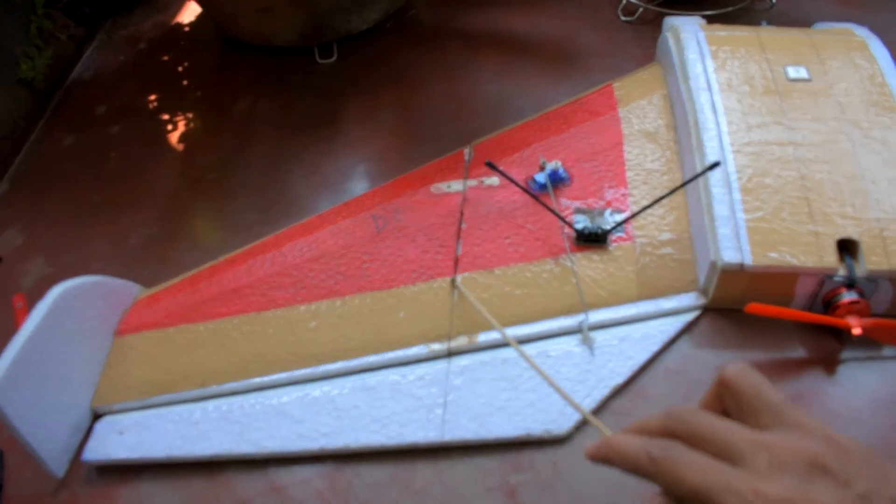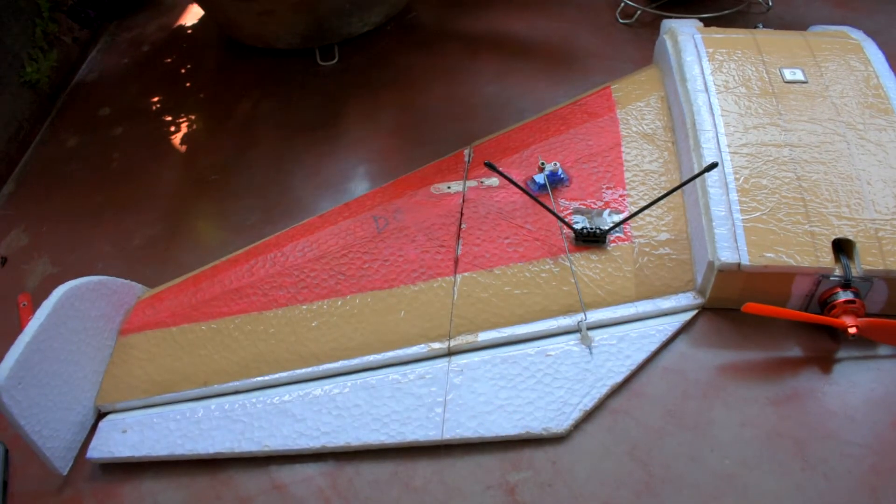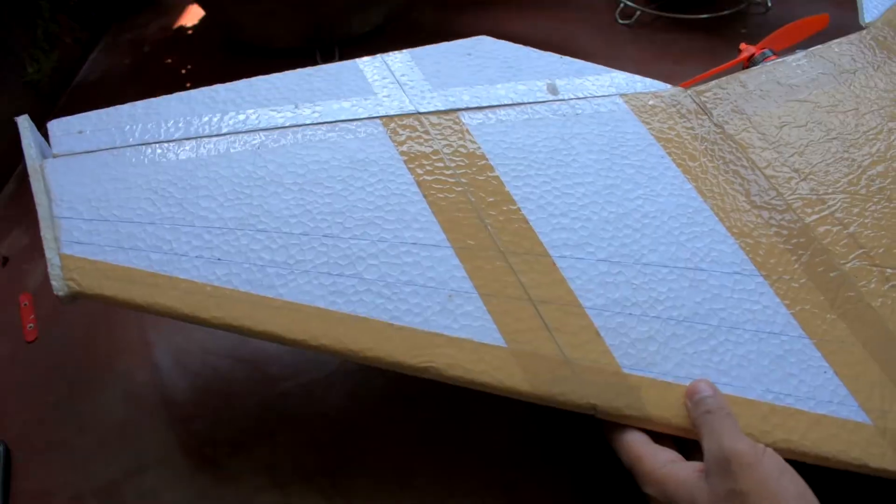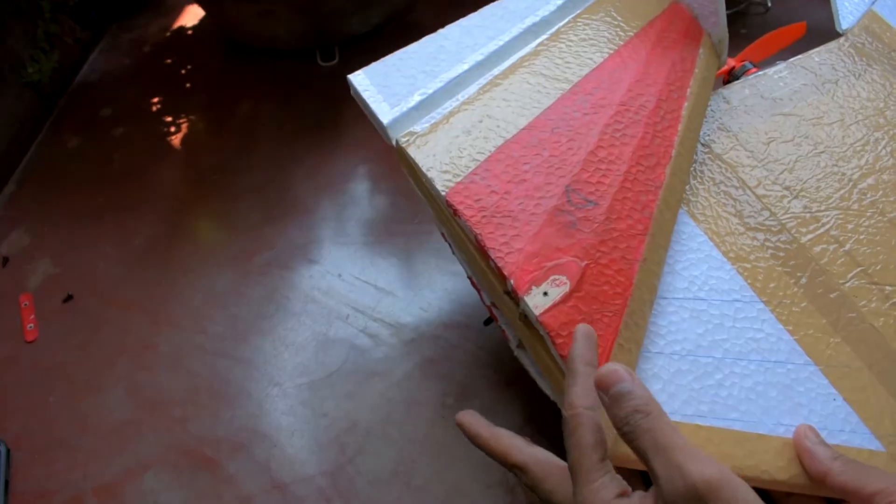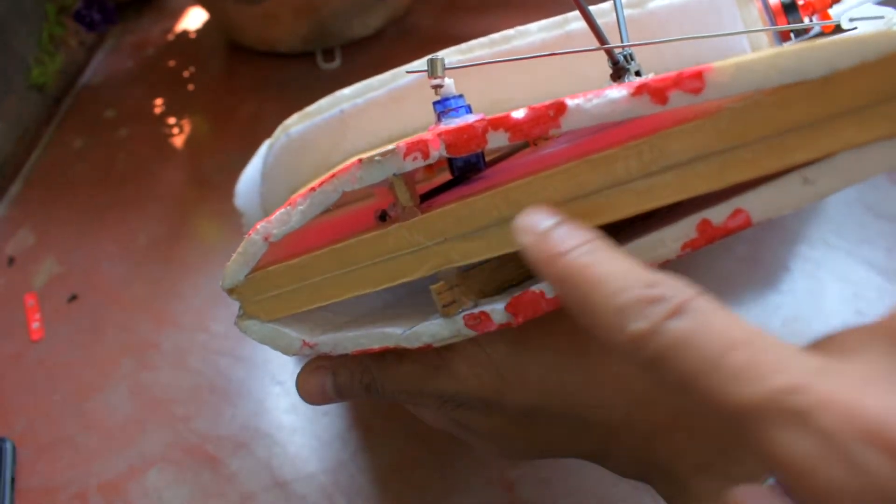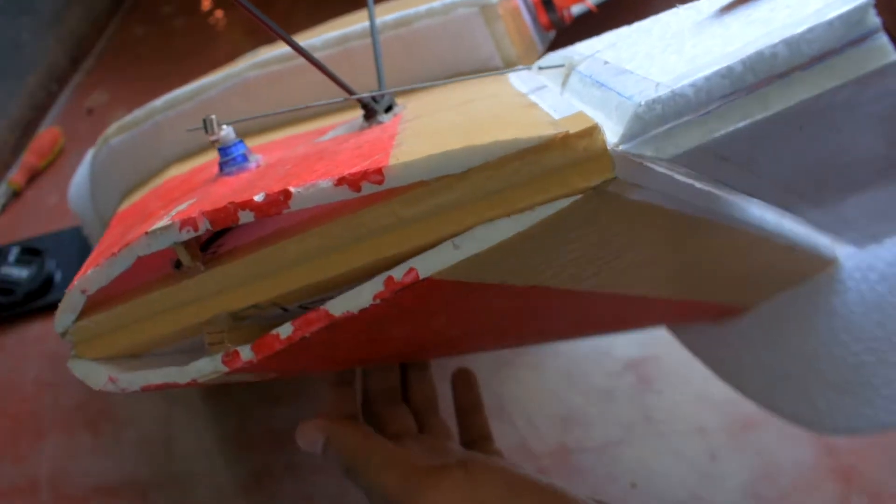Now you have to make a hinge here and the process will be same as like this control surfaces hinge. So first paste a packing tape here and then fold it, and here you need to paste another layer of tape. So now your hinge is ready.